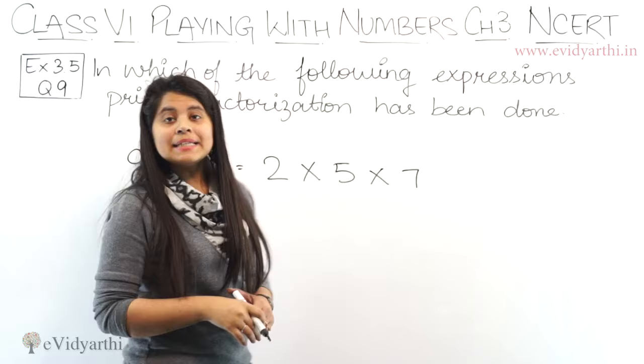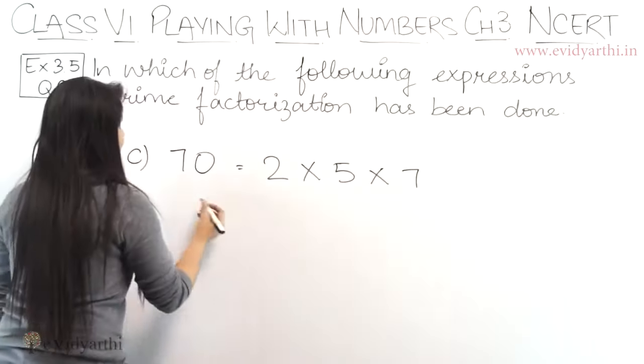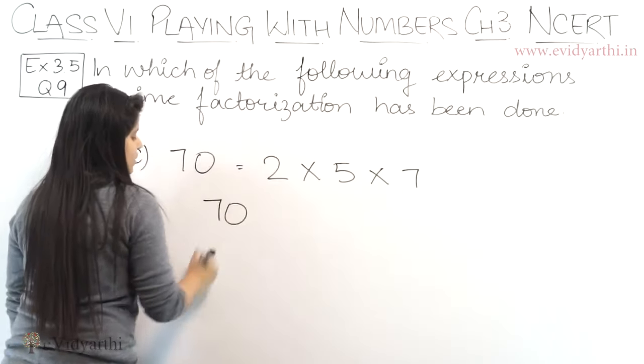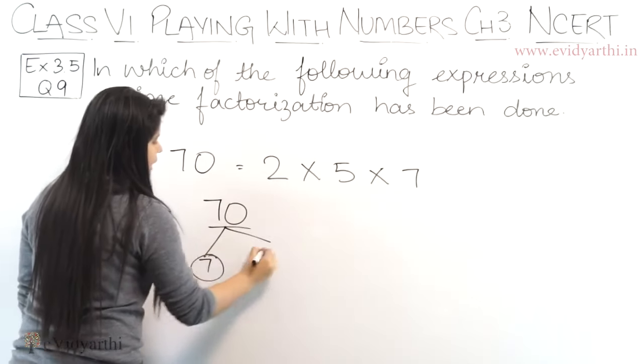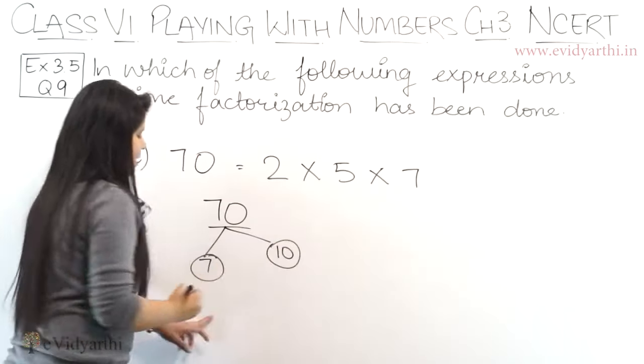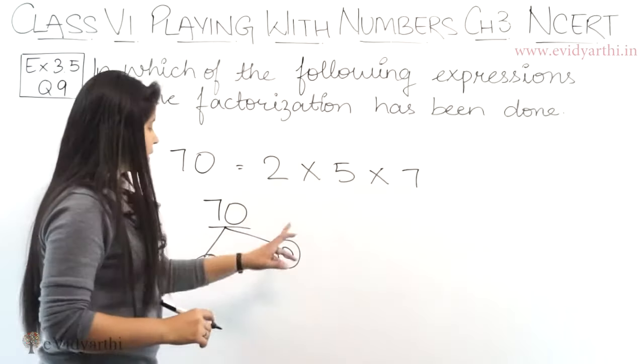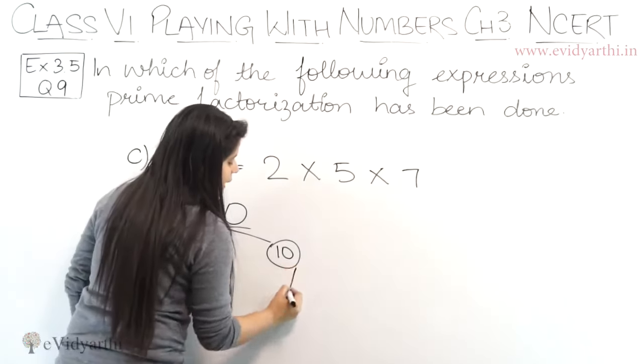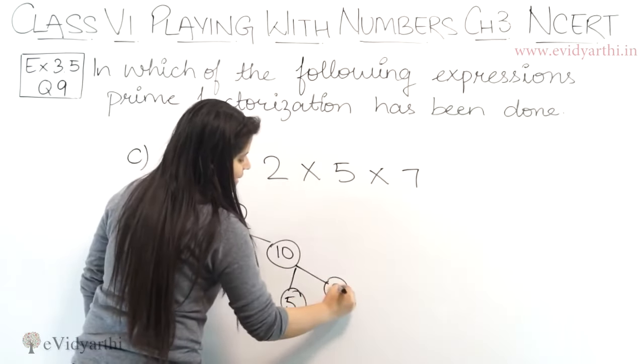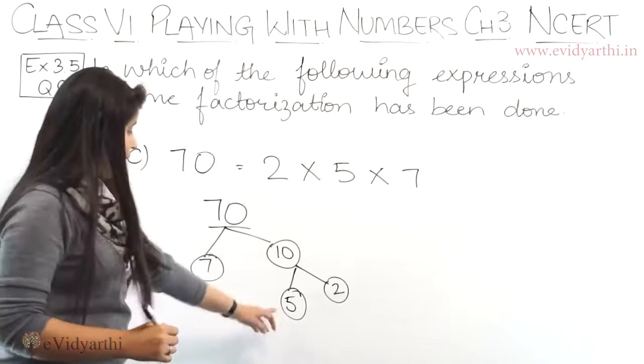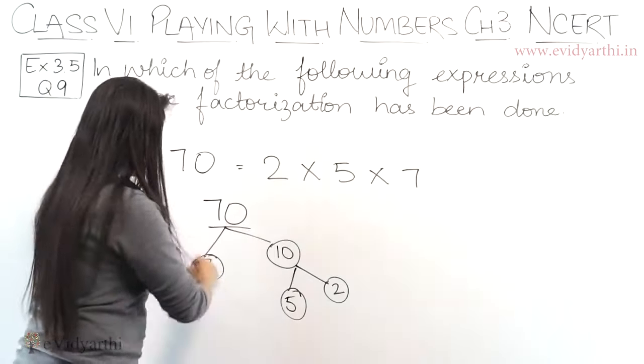Now coming to the C part. C part we have 70 equals to 2 into 5 into 7. Now if I prime factorize 70, I can write it as 7 into 10 because 7 times 10 is 70. Now 7 is a prime number, it cannot be expanded. But 10 can be. So this will be 5 times 2 is 10. 5 is a prime number. 2 is also a prime number.